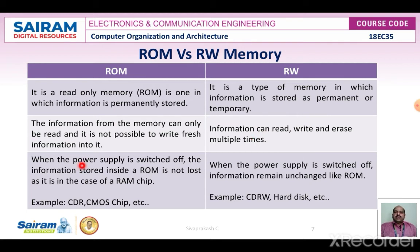When the power supply is switched off, the information stored inside ROM is not lost, unlike in the case of a RAM chip. Whereas with read-write memory, when power is switched off the information that has been loaded or written remains unchanged — similar to ROM. Examples include CD read-write and hard disk.